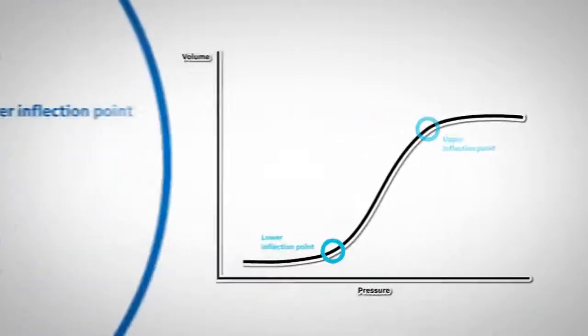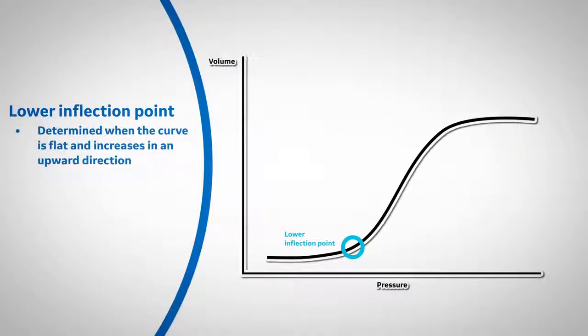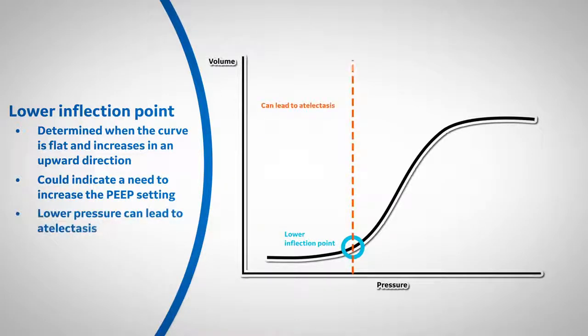The lower inflection point is determined when the curve is flat and increases in an upward direction. This could indicate a need to increase the PEEP setting. Any pressure below the lower inflection point can lead to atelectasis.